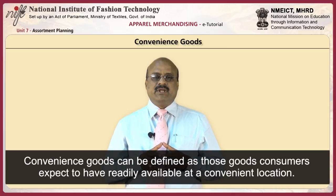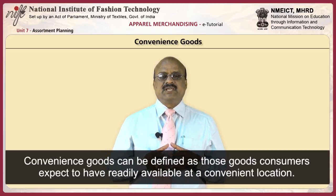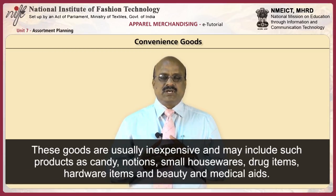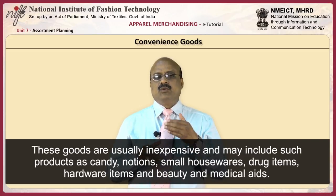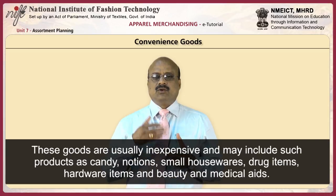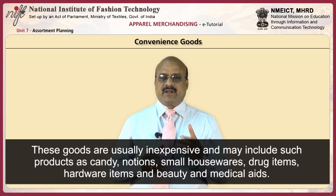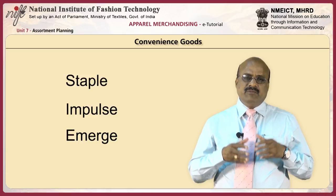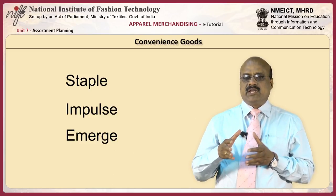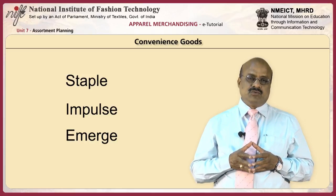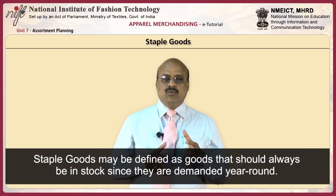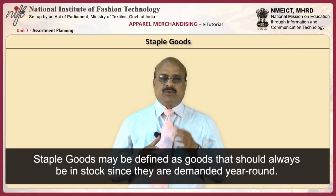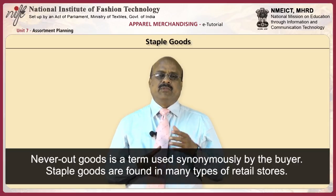Convenience goods can be defined as those goods consumers expect to have readily available at a convenient location. These goods are usually inexpensive and may include candy, notions, small housewares, drug items, hardware items, and beauty and medical aids. Convenience goods can be further classified into staple, impulse, and emergency goods. Staple goods may be defined as goods that should always be in stock since they are demanded year-round — also called 'never out' goods. They are found in many types of retail stores.